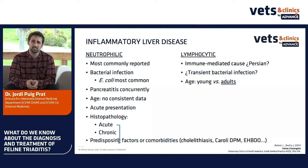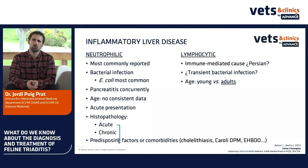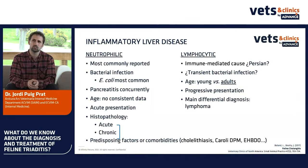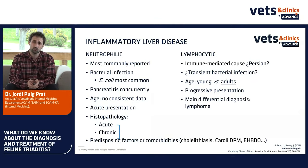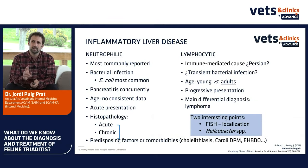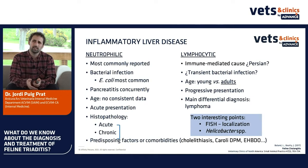We don't have consistent data on age, but more and more we see it in adult cats. It's more a progressive presentation rather than an acute one. We always have to think that the main differential diagnosis in these cats is lymphoma. Two interesting points I want to share are FISH and Helicobacter spp.